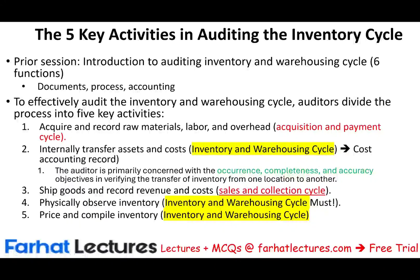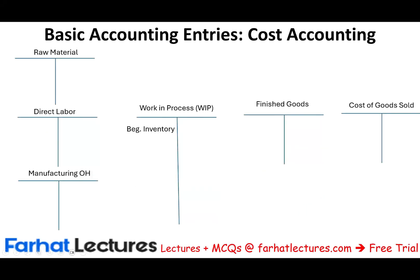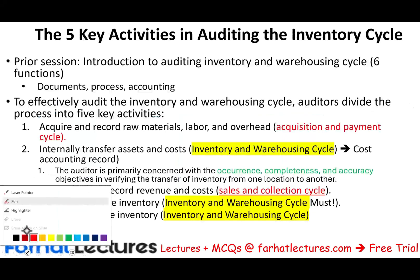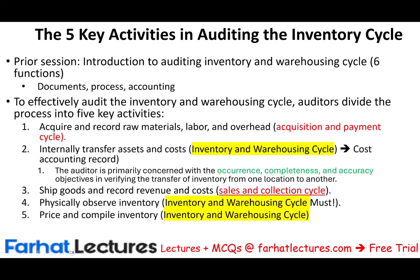Hello and welcome to this session in which we will discuss auditing the cost accounting record during the inventory cycle. One of the aspects of the inventory cycle, one of the steps, is when we transfer assets and costs internally from one account to another — for example, from raw inventory to work in process, from work in process to finished goods. That's one of the processes we undertake when auditing the inventory cycle, one of the five.